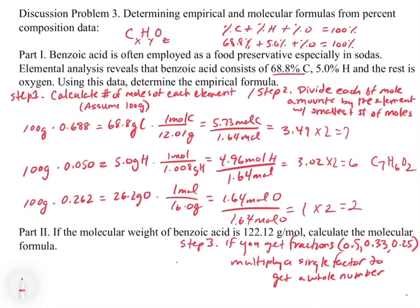To summarize the three steps: step one, calculate the number of moles of each element; step two, divide each mole amount by the element with the smallest number of moles to get ratios; step three, if needed, multiply all ratios by a single multiplier to get whole numbers — multiply by 2 for 0.5, by 3 for 0.33, by 4 for 0.25. Step three is optional if you already get whole numbers.